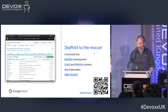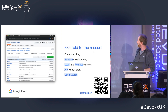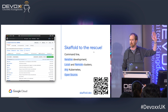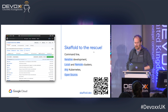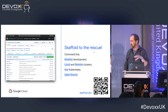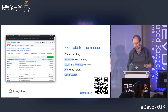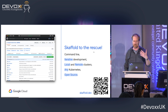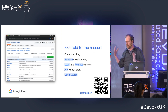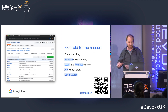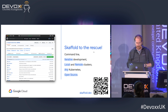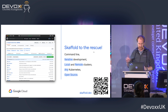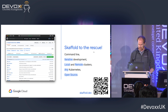This is where Skaffold enters. Who knows Skaffold? Nobody? Cool — you're going to discover Skaffold. Skaffold is a CLI tool that you can install on your machine or on your CI/CD. It gives you iterative development for Kubernetes, and it works with local clusters or remote clusters — in fact, any Kubernetes — and will give you a very tight feedback loop. It's open source. You can find it on GitHub at google/container-tools/skaffold.